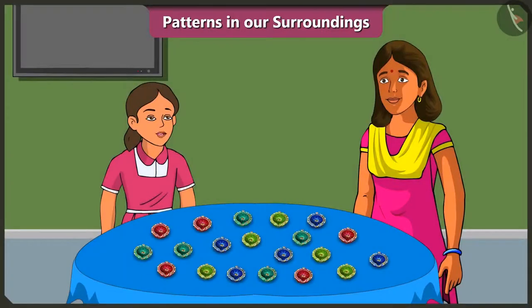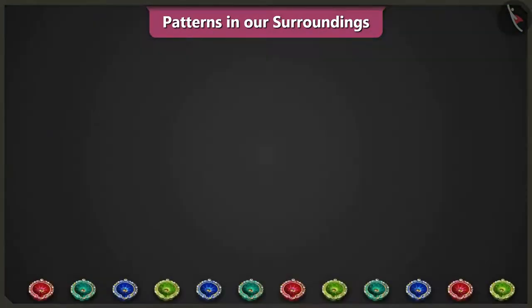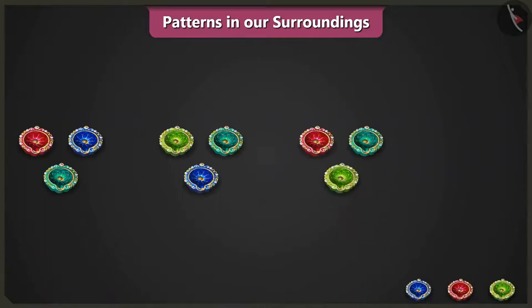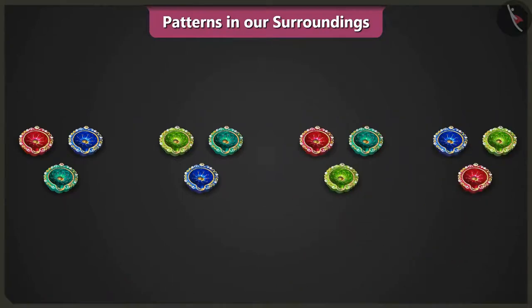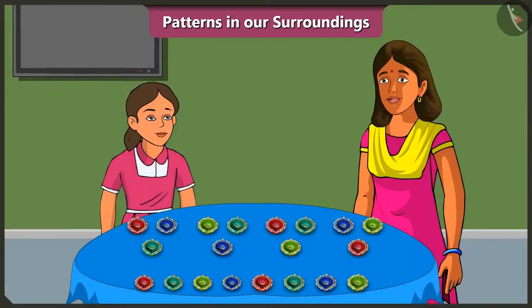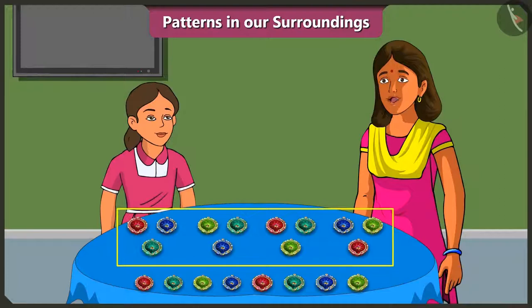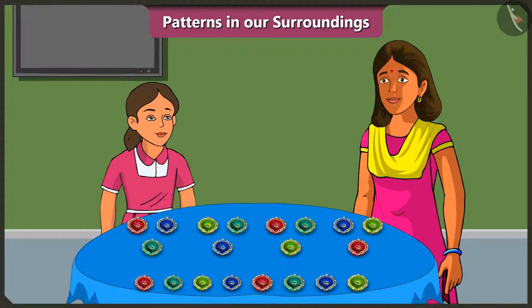Mummy, what else are we going to do for the Diwali decorations at our home? We will decorate the courtyard of our house with diyas. Mummy, we will place three diyas in a row and make a pattern like this. Vinny, just placing objects in a row will not mean that you have made a pattern. This is not how it works.